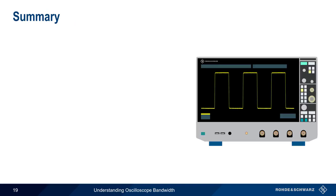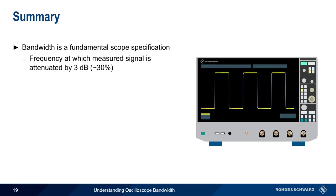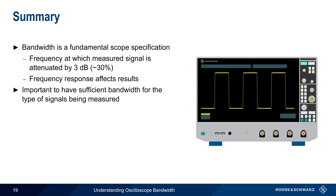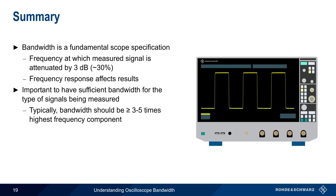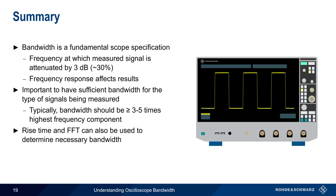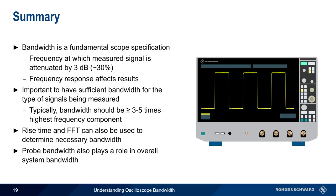Let's end with a brief summary. Bandwidth is one of, if not the most important, oscilloscope specification. It's defined as the frequency at which the measured signal is attenuated by 3 dB, or about 30%. In addition, the frequency response of the oscilloscope — that is, Gaussian versus flat — will also affect measurement results. It's very important to have sufficient bandwidth for the type of signal being measured, and the general rule is that scope bandwidth should be at least 3 to 5 times the highest frequency component. The rise time of a digital signal can also be used to determine the required scope bandwidth, and looking at the signal in the frequency domain using a scope's FFT function can help determine the highest frequency content of the signal. Finally, remember that the oscilloscope is one part of an overall measurement system, so the bandwidth of the probes used with the oscilloscope also plays an important role. This concludes our presentation, Understanding Oscilloscopes Bandwidth. If you'd like to learn more about oscilloscopes and other related topics, please see the links in the video description. Thank you.